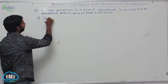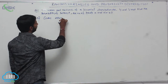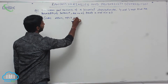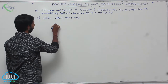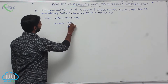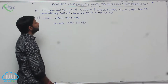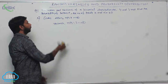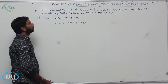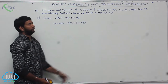Given in binomial distribution: mean NP is equal to 4 — this is condition 1 — and variance NPQ is equal to 3 — this is condition 2. From these two conditions, find the value of P and N.